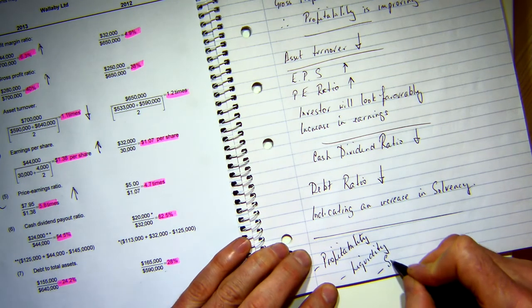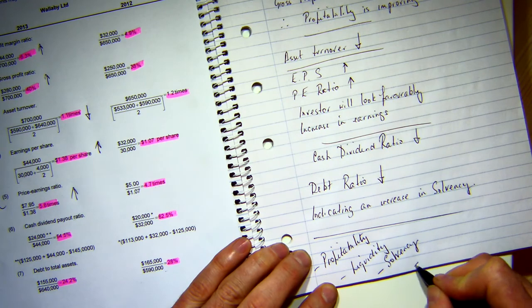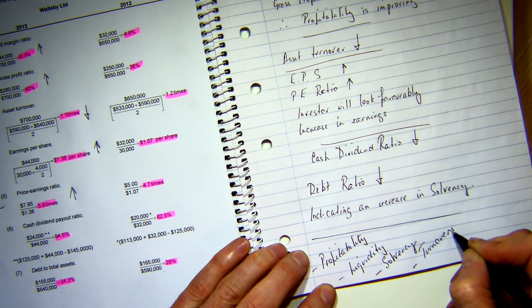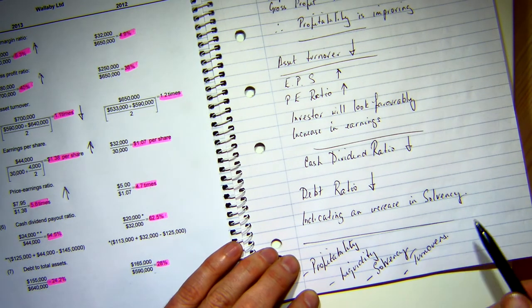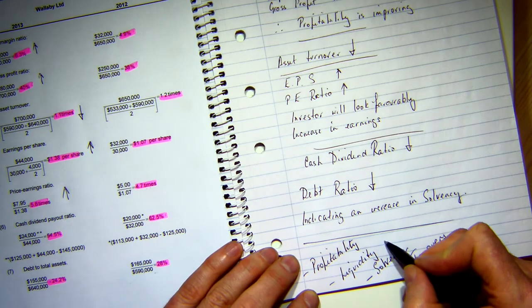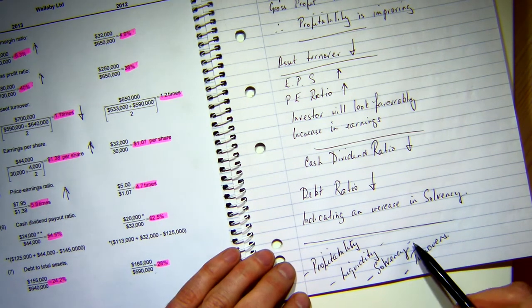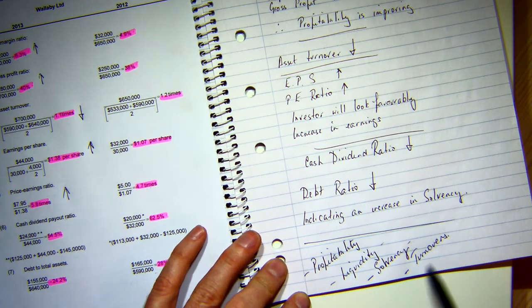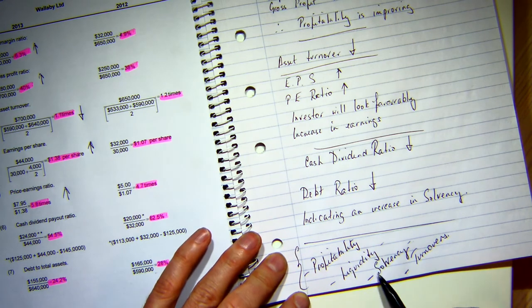We have solvency and we have turnovers. These are my groups of ratios: profitability, liquidity, and solvency - they're major. This is working capital, this is long term, this is short term. Profitability is also short term. Work out how these ratios match together. We're not going to give you an increase in profitability or liquidity and a decrease in solvency, because they should go in the same direction.